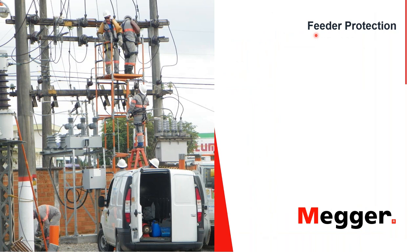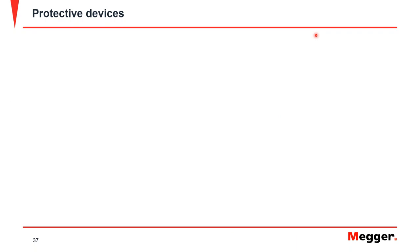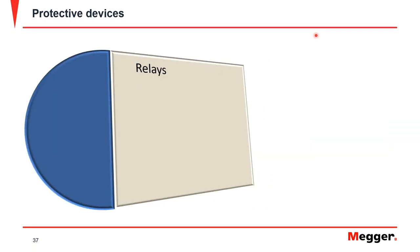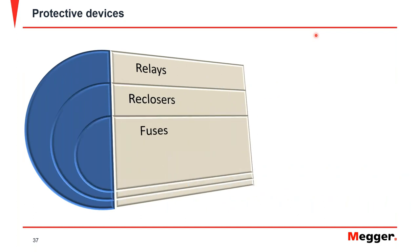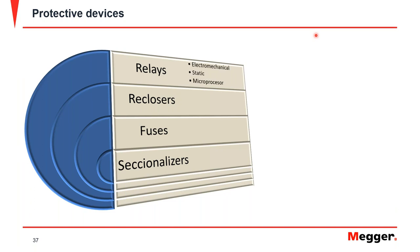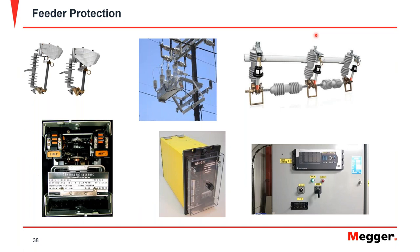When it comes to protective devices in feeders, we use relays, reclosers, fuses, and sectionalizers. Relays can be electromechanical, static, or microprocessor-based. Depending on location, you may find only electromechanical or mostly microprocessor relays, but most systems have a combination. Protection functions include instantaneous and time overcurrent for phase, neutral, ground, and negative sequence overcurrent — all connected to CTs. Voltage-related functions include under/overvoltage, ground overvoltage, and negative sequence overvoltage. Distance protection, frequency elements, power elements, and directional overcurrent relays are also used.